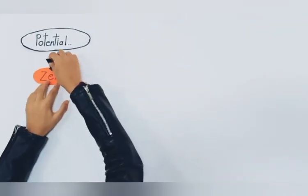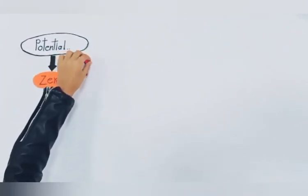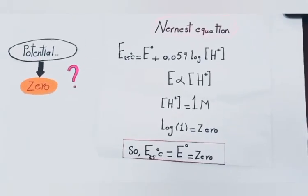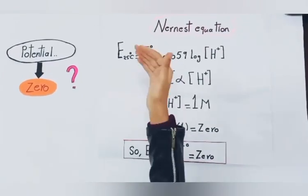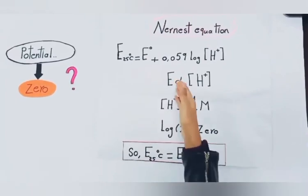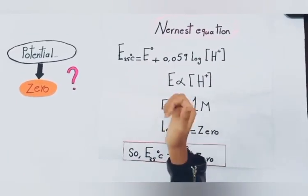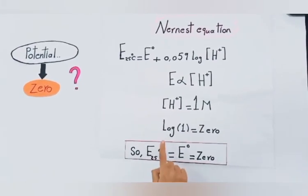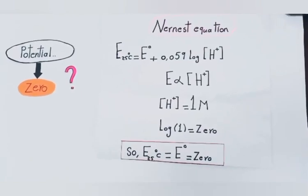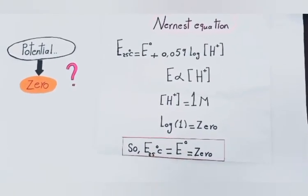The potential of the standard hydrogen electrode is zero. Why is the potential zero? To understand the reason, let's look at the Nernst equation. The Nernst equation states: E (half-cell) = E° (half-cell) + 0.059 × log[H⁺]. Since E (half-cell) is directly proportional to the concentration of hydrogen ions, and the concentration of hydrogen ion equals 1 molar, log(1) equals 0, so E (half-cell) equals E° equals zero.